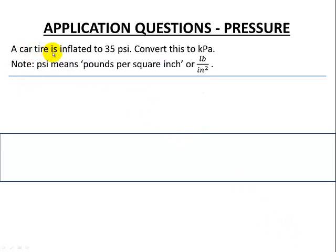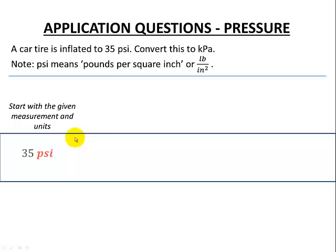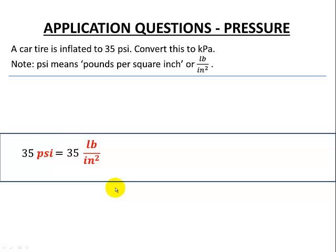Another pressure question: a car tire is inflated to 35 psi, and we want to convert this unit to kilopascals. PSI stands for pounds per square inch. In symbol format, LB is the symbol for pounds and square inches is inches squared. We start with 35 psi — written as 35 pounds per square inch — and look up the equivalence on our tables using the unit ratio technique.